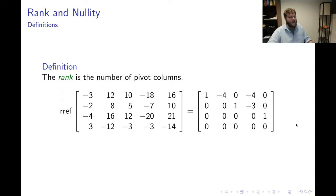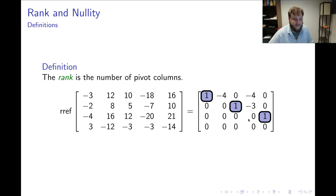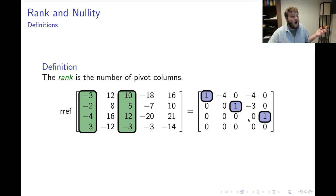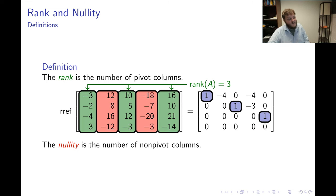The rank of any matrix is defined as the number of pivots in its reduced row echelon form. Here I've taken a 4×5 matrix, reduced it via Gauss-Jordan, and found 3 pivots — so the rank is 3. The nullity is the number of non-pivot columns. Columns 2 and 4 do not have pivots, so there are 2 non-pivot columns, meaning the nullity of this matrix equals 2.